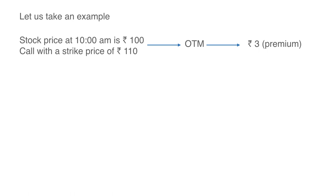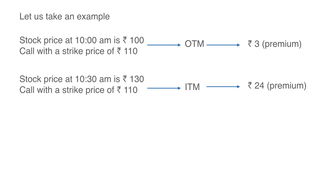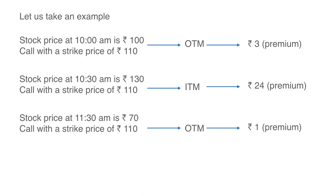Let's first take the example of a call. If the stock price is at Rs.100 at 10 am, then the call with the strike price of 110 will obviously be out of the money and let's say it's trading at a premium of Rs.3. At 10.30, the stock price moves to Rs.130. Then the call with the strike price of 110 which was earlier out of the money will now suddenly become in the money and will start trading at a higher premium, say Rs.24. Then at 11.30 am, the stock price dips to 70, which means it once again becomes out of the money, and the call with the strike price of 110 will trade at a low premium of Rs.1.